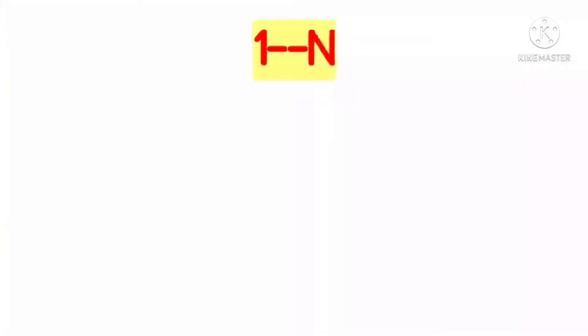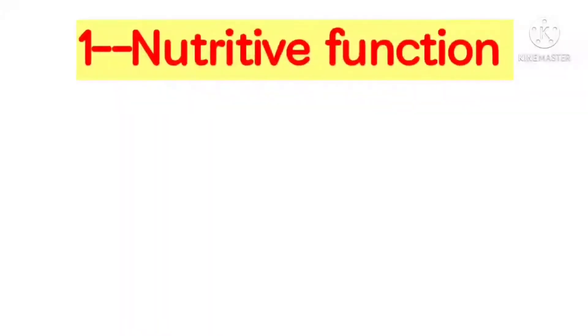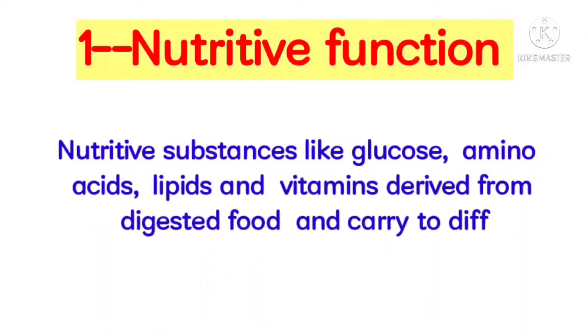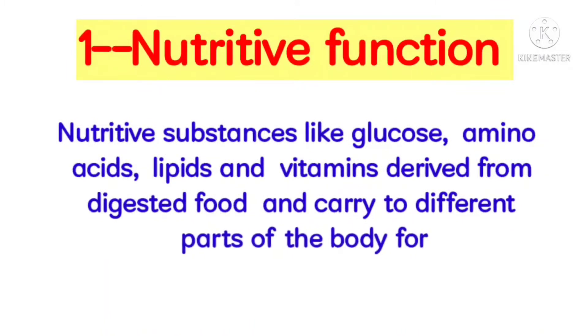First one is Nutritive Function of Blood. Nutritive substances like glucose, amino acids, lipids, and vitamins derived from digested food are carried to different parts of the body for growth and production of energy.